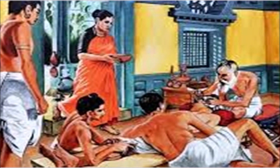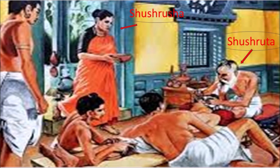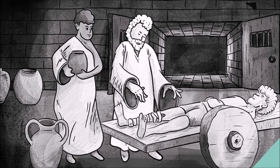Have you come across this picture? In it, a priest is doing surgery, a lady is holding a ball, and servants are handling the patient. This priest is known as Sushruta, the world's first doctor and father of surgery. The lady with the ball is known as Sushrusha, wife of Sushruta, and she is considered the first nursing assistant in his clinic or hospital.